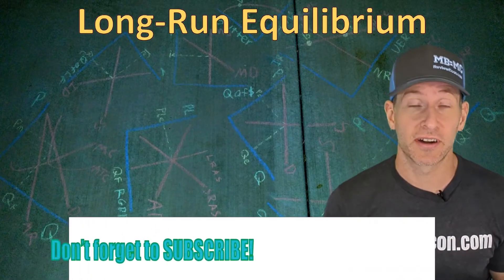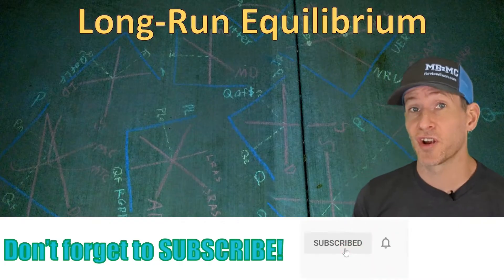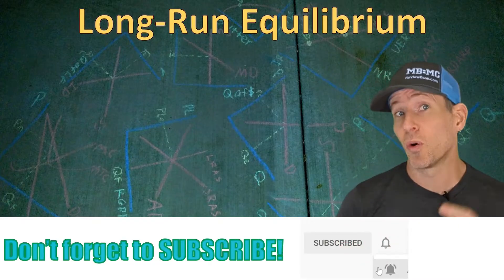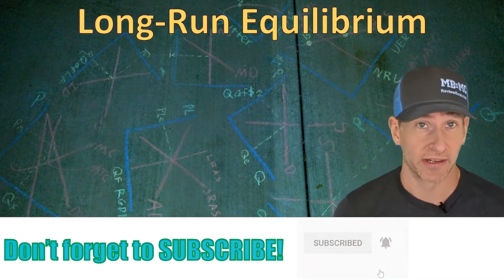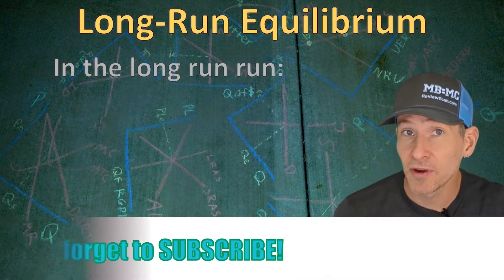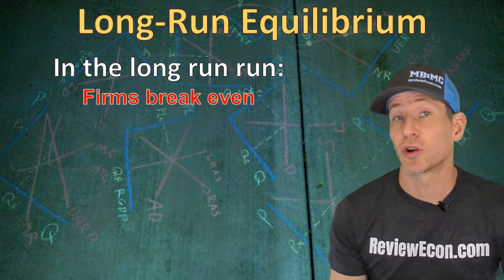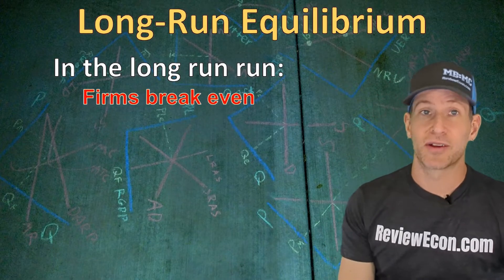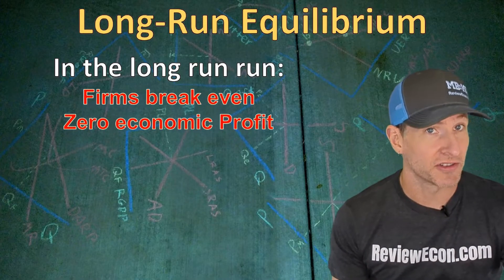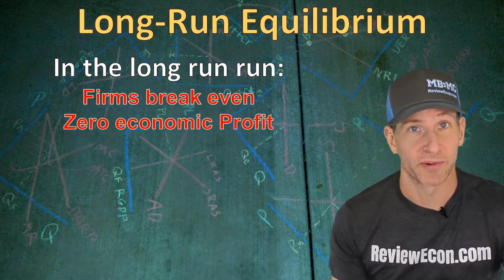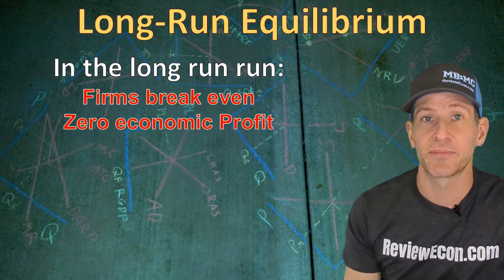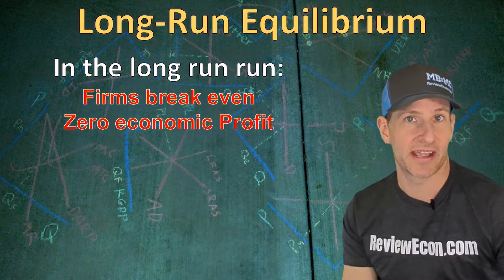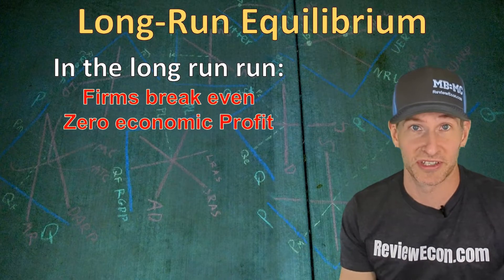Now, as we learned in our last video, perfectly competitive firms can make economic profits or economic losses in the short run. But in the long run, perfectly competitive firms are going to break even. That means they earn zero economic profit, which is also called normal profit, which is to say that their accounting profit is equal to the income they could earn doing something else with their resources.